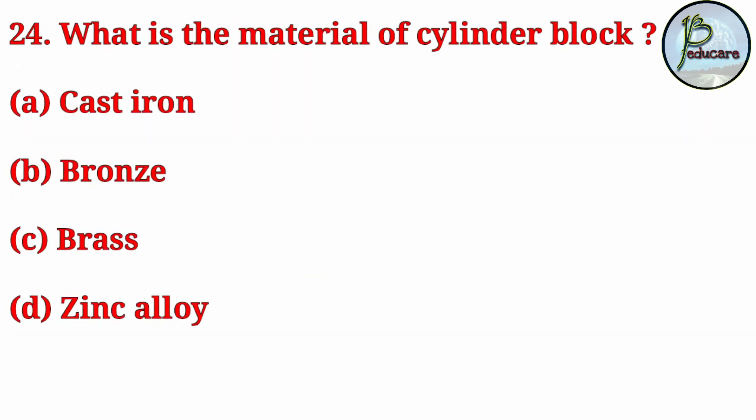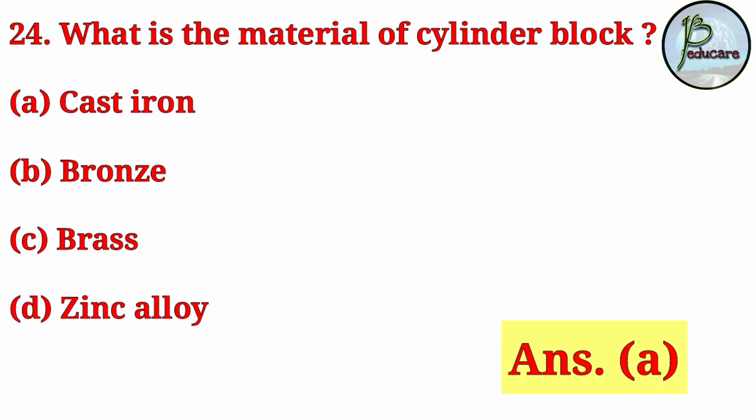What is the material of the cylinder block? What material is the cylinder block made of? The correct answer is Answer A — cast iron. The cylinder block material is cast iron.